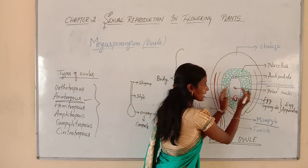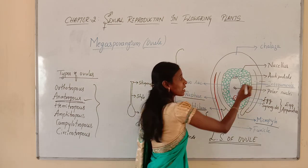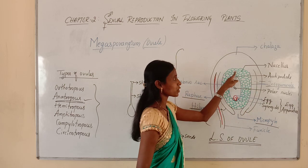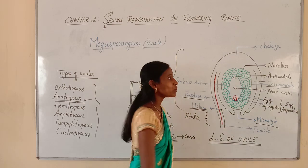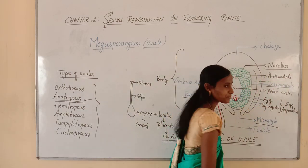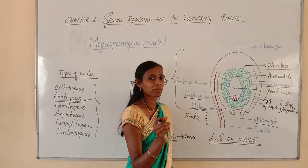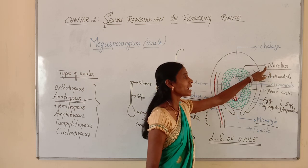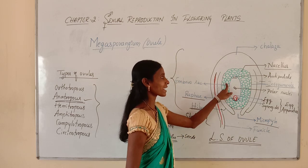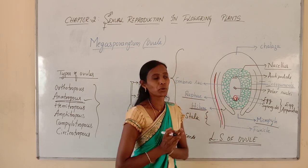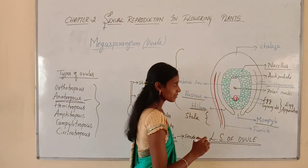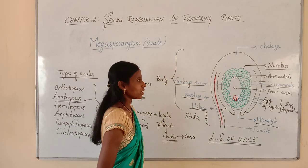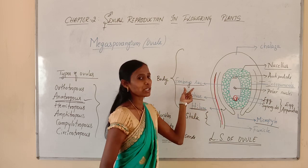The inner integument encloses a parenchymatous mass of tissue called Nucellus. The term Nucellus is very important — many students get confused and write 'nucleus' instead of 'nucellus', which is completely wrong. It is Nucellus — a parenchymatous mass of tissue present within the ovule. And this Nucellus encloses a female gametophyte called Embryo Sac.